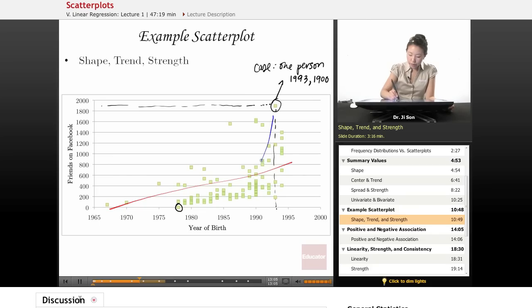And if you drew a curve to sort of fit this, that might actually be better, right? Where it seems that, you know, the people born up to 1985 there, they have relatively lower number of friends than the people born sort of afterwards. That seems to shoot up more.